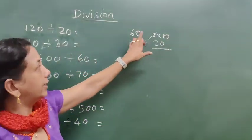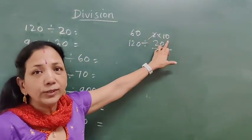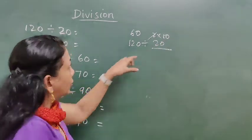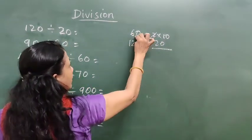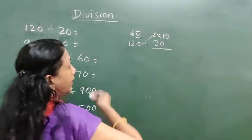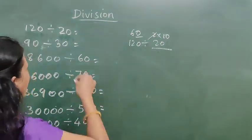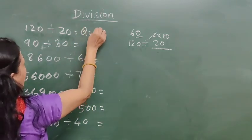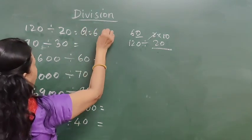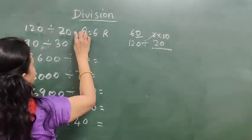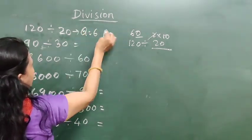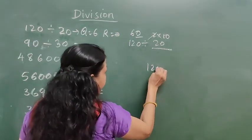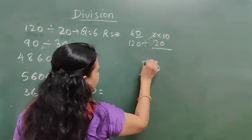Now 60 divided by 10 — how many 0s are there? One 0. So that one place will be remainder. The quotient will be 6. So you are getting quotient equal to 6, remainder equal to 0.